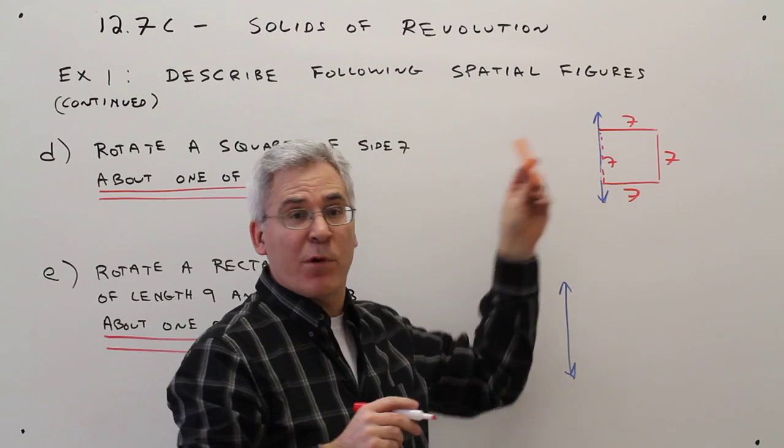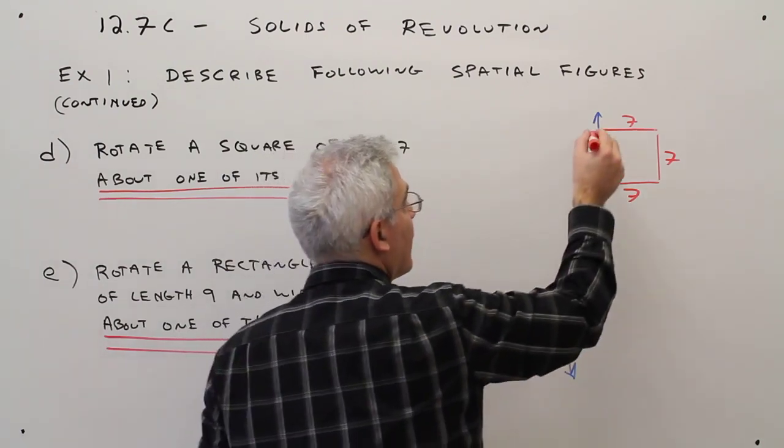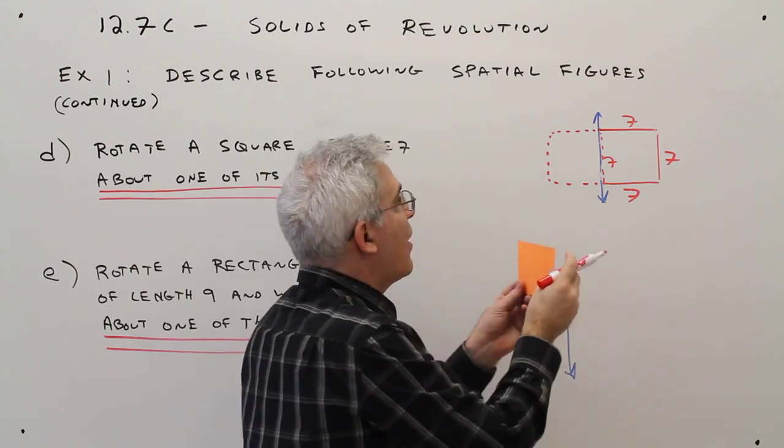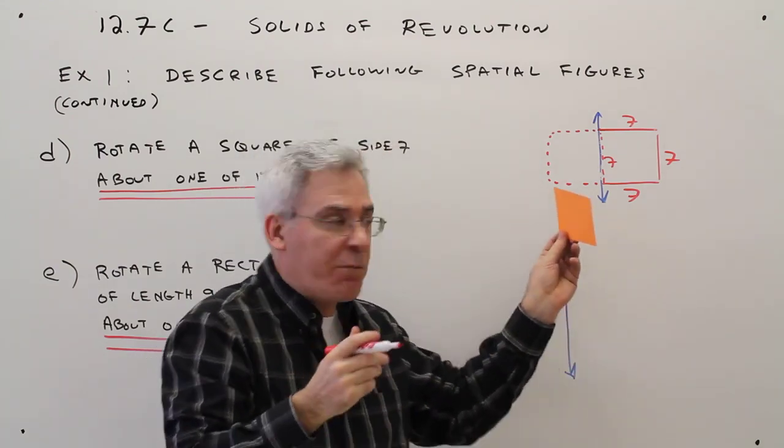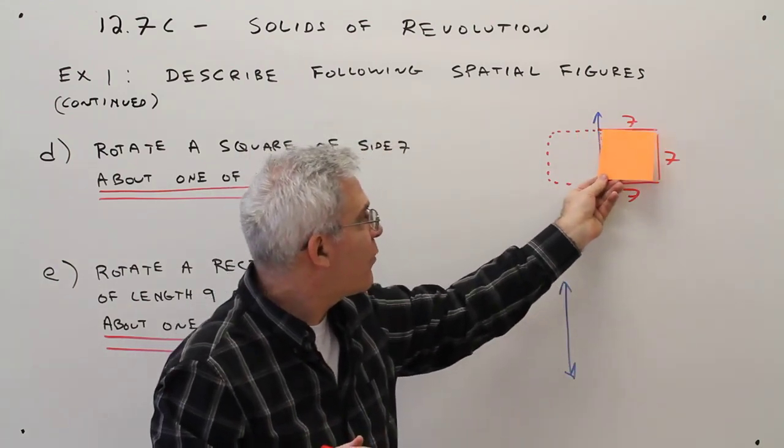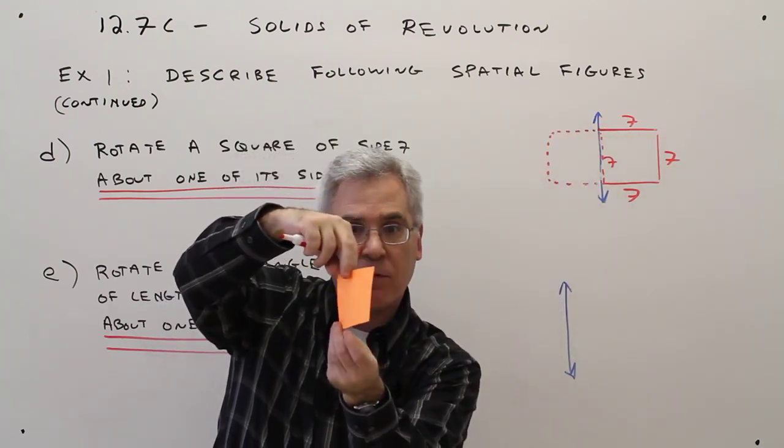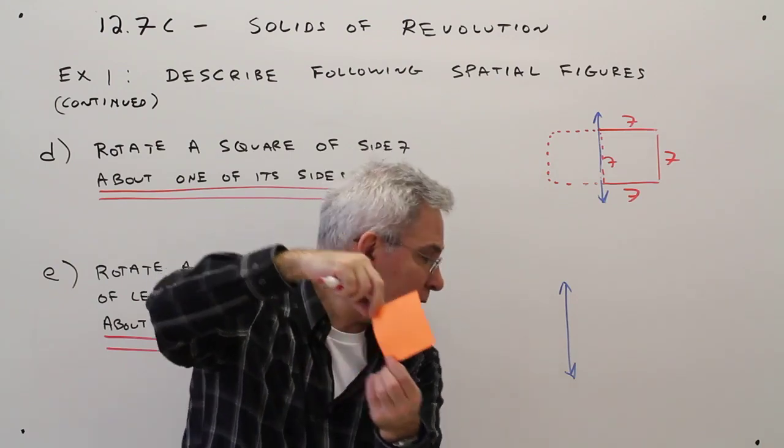And again, I find it easiest if we reflect. So if we were to reflect. And then I like to, if possible, use this. So if this thing were to be spinning around, hopefully you could visualize I would be getting a cylinder.